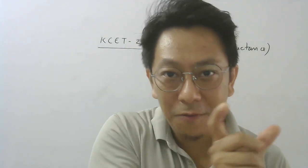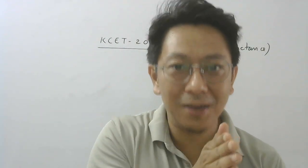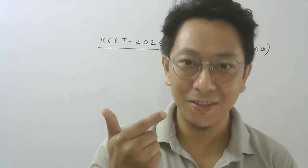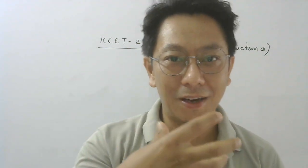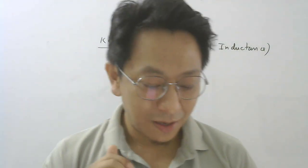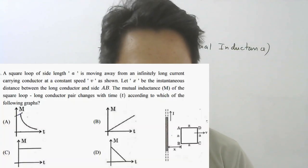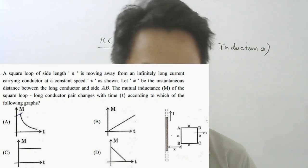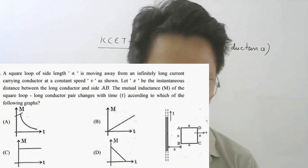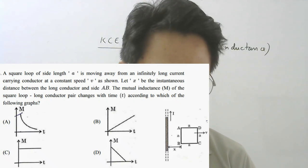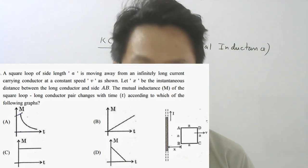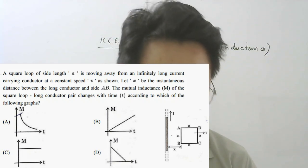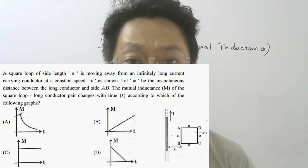As the square loop moves away from the wire, the magnetic field passing through the loop will change, and therefore the flux will change. The flux and current will have some relation. Now they are asking: let X be the instantaneous distance between the long conductor and side AB of the square loop. The mutual inductance M of the square loop and the long conductor pair changes with time according to which of the graphs?